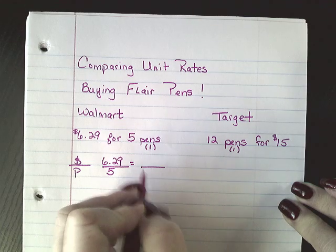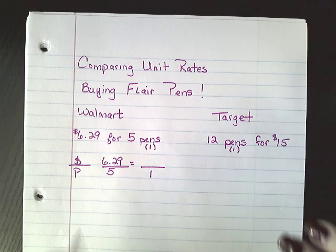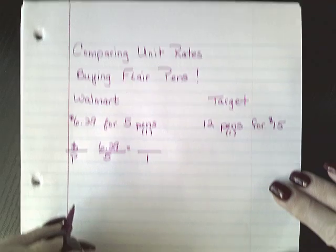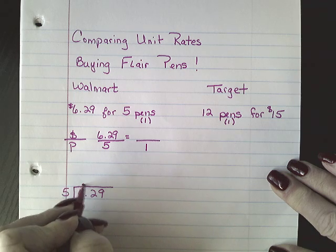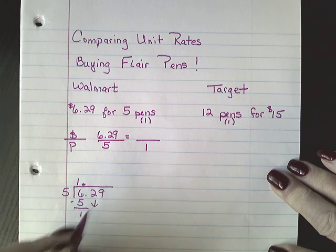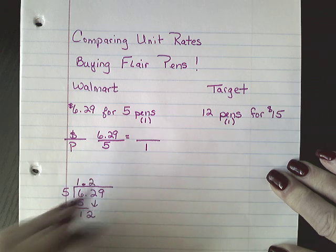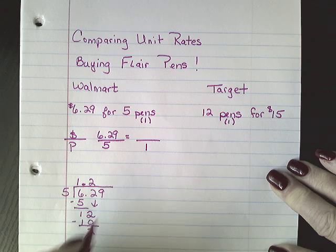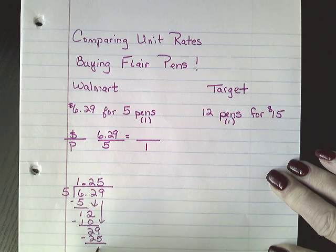How much would one pen be? Whenever you're looking for the better deal, you have to base it off of the unit rate. So I'm going to take $6.29 and divide by five pens. Five goes into six one time — subtract and get one, bring down your two. Five goes into twelve two times, that's ten. Bring down your nine. Five goes into twenty-nine five times, that's twenty-five. Subtract and that's four.